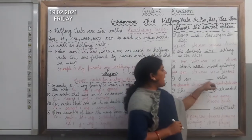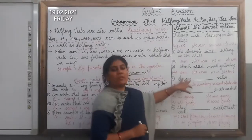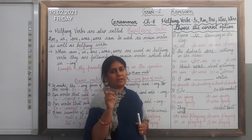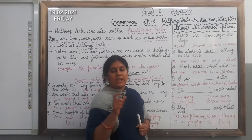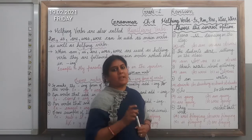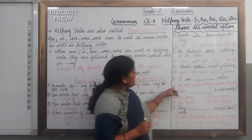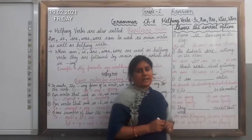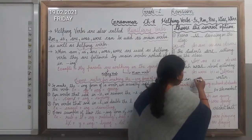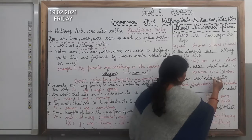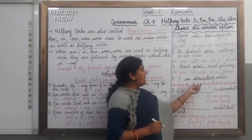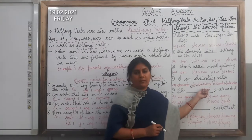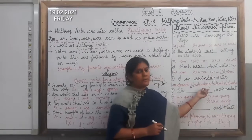Question four is: I am ___ water. Here the helping verb am is given to you. When the helping verb is given to you, you will write the verb in its ing form. Four options are given: A is drink, B is drinking, C is drank, and D is drinks. So which is the correct answer? Yes, option number B is correct — that is drinking. So the sentence is: I am drinking water. Whenever the helping verb is given before the main verb, we usually add ing to the verb.